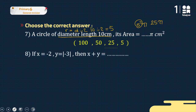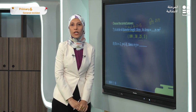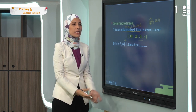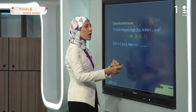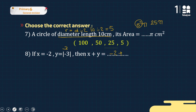Exercise eight: x = -2 and y = |−3|. First, solve the absolute value: |−3| = 3, so y = 3. Then x + y = -2 + 3 = 1. The answer is 1.